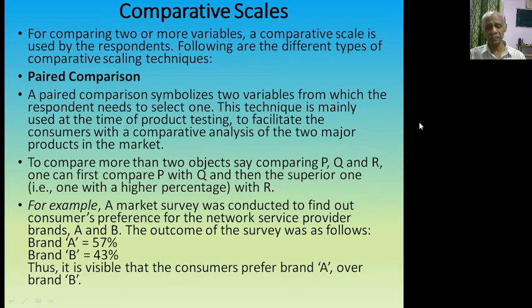Paired comparison means where there are two variables, two brands, or two objects in one sector. To compare more than two objects, say P, Q, and R, one can first compare P with Q and then compare the superior one with R.